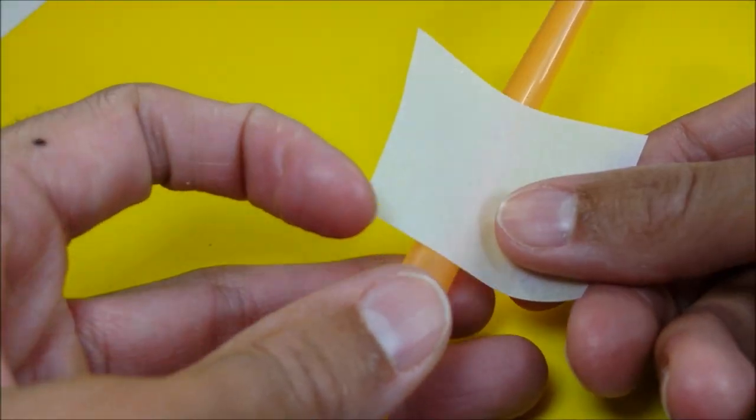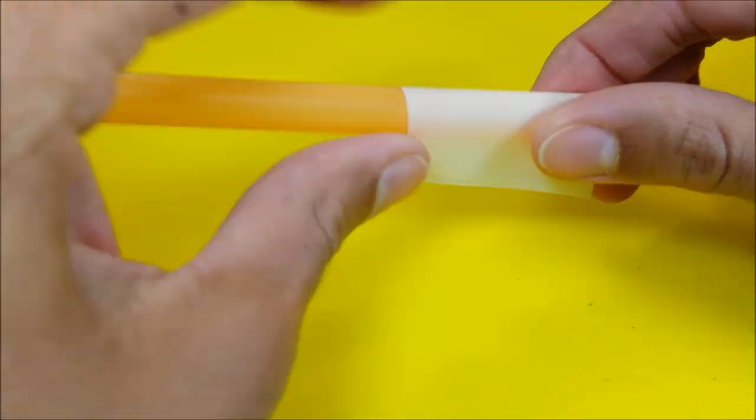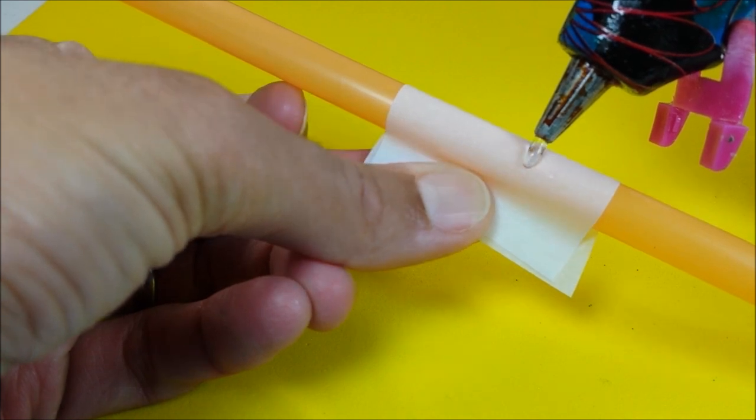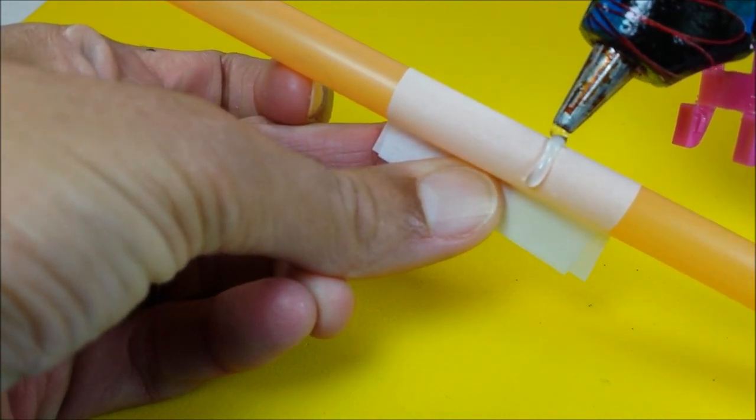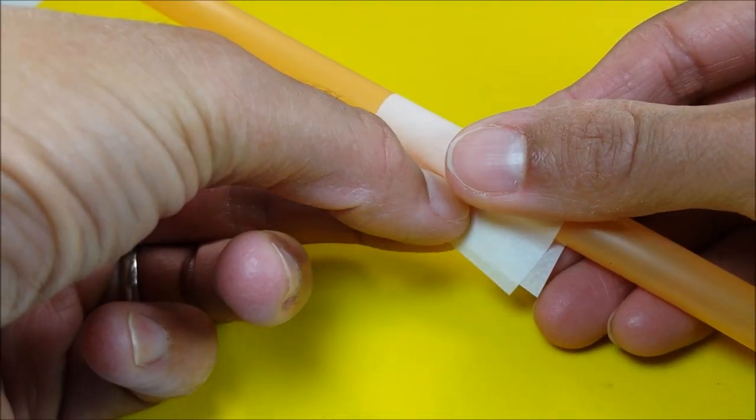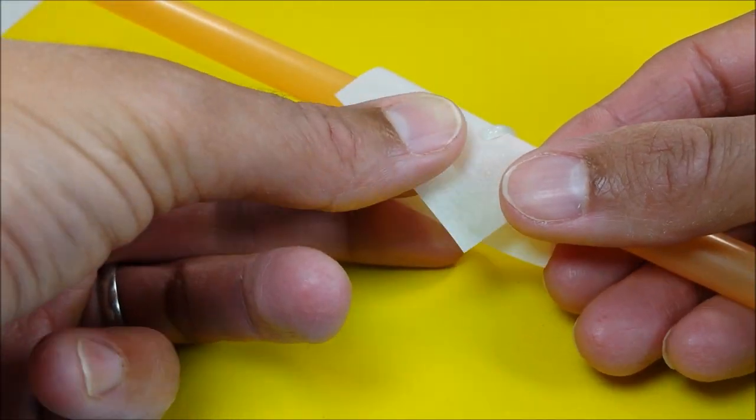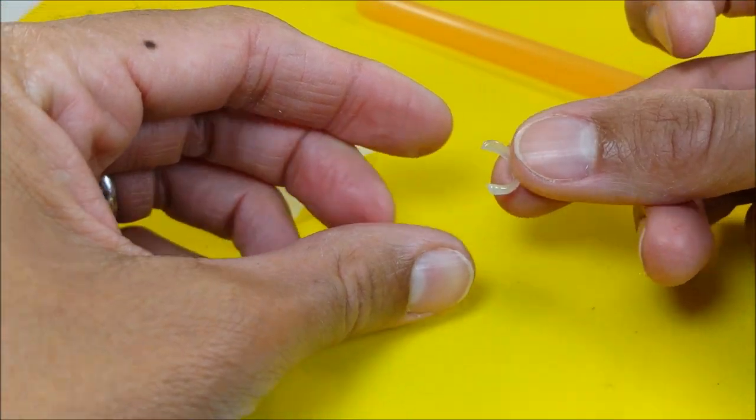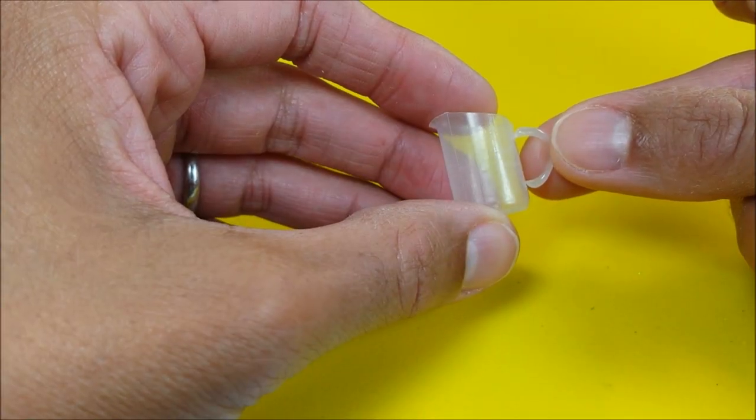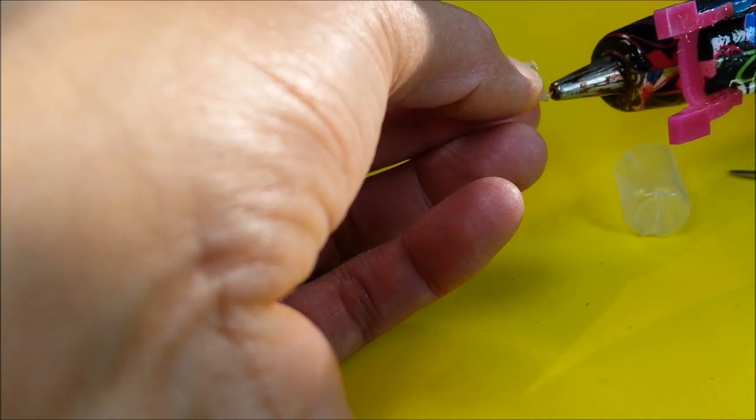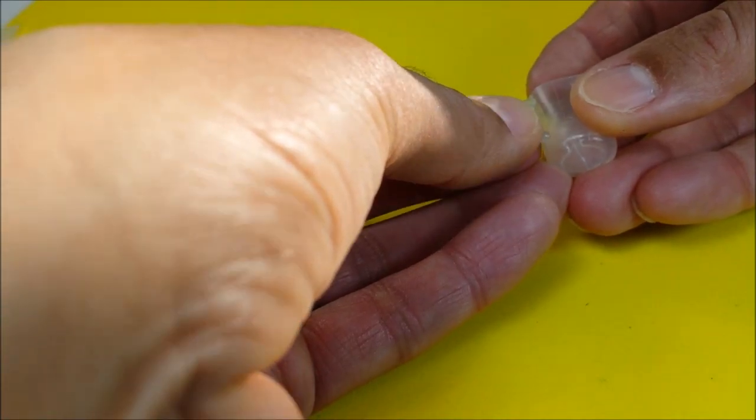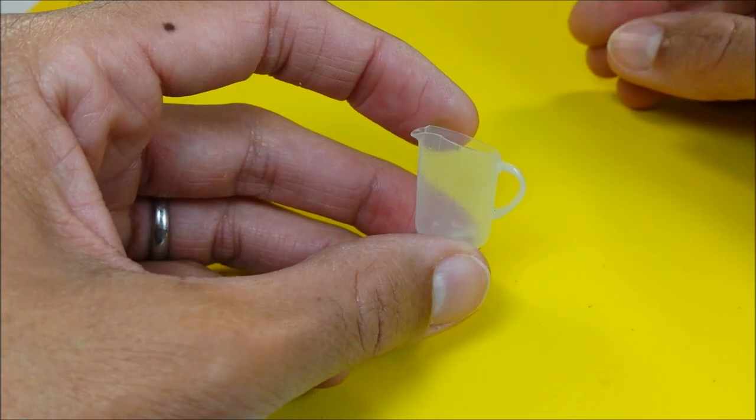For my handle, I lay parchment paper on a straw and then using my hot glue gun, I can just kind of drape it over to make a little C shape. And when dry, I glue it to my pitcher. And your pitcher is good to go.